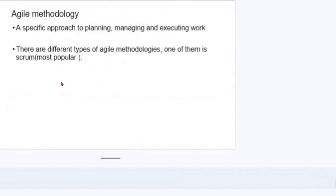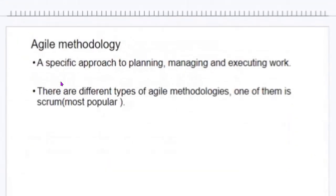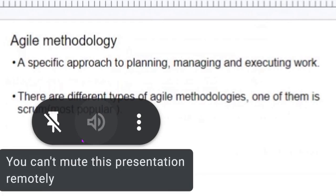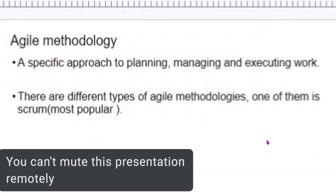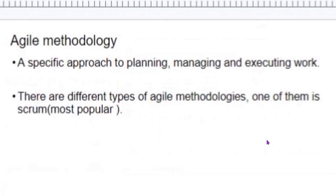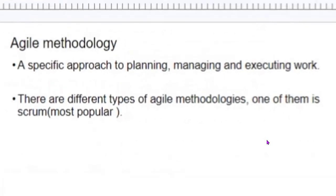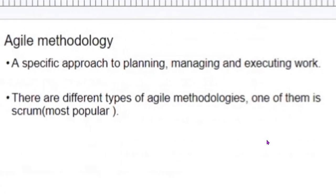What is an Agile methodology? It is a specific approach to planning, managing, and executing work. There are different types of Agile methodology. One of them is Scrum, which is the most popular. But we have some other methodologies, which include Kanban, Software Development, Lean Development, Scrum Band, Nexus, among others.